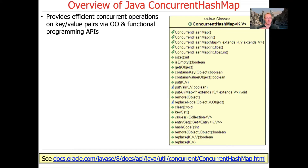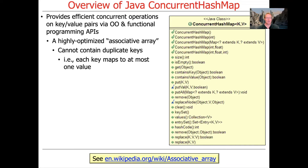This really got its start in earnest in Java 8, although there were some features added earlier as well. One of the things you can do with a ConcurrentHashMap is have highly optimized associative arrays, which don't contain duplicate keys.